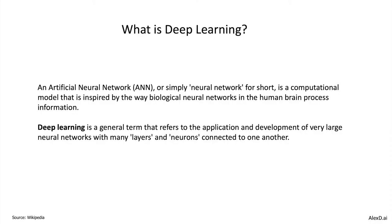What is deep learning? Deep learning is a branch of machine learning. Deep learning uses artificial neural networks. And what are artificial neural networks? Neural networks are a computation model that is inspired by the way biological neural networks in the human brain process information.